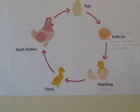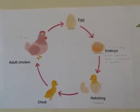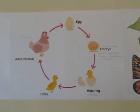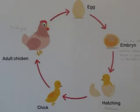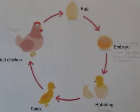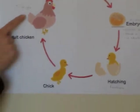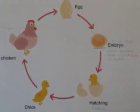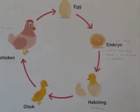What happens is the little egg starts to crack, and out comes a chick. This little chick is covered in feathers. The chick eats, and this is the growing stage, until it becomes an adult chicken. And that whole life cycle takes seven to eight years.